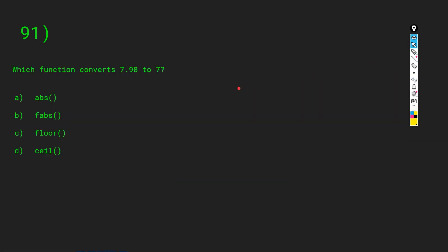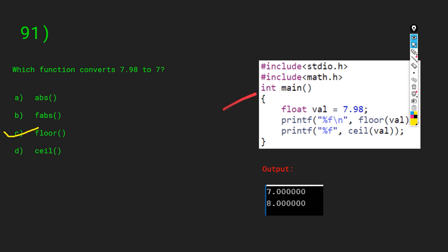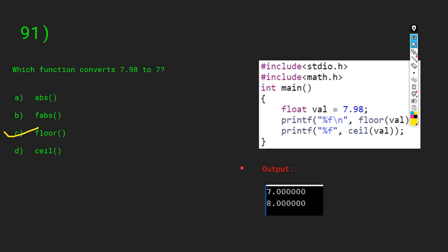Which function converts 7.98 to 7? The answer is C: floor(). To use floor and ceil, include the math.h header file. With float value 7.98, floor() returns 7 and ceil() returns 8. Always remember: floor and ceil convert float values to their lesser-than or greater-than whole number equivalents — you can think of them as producing integers.